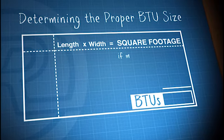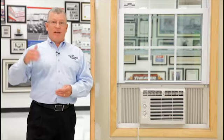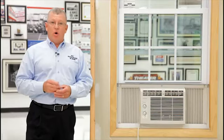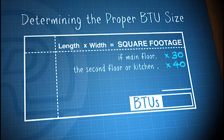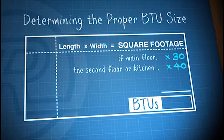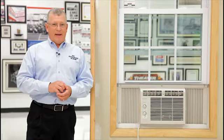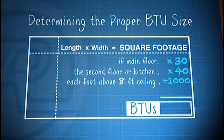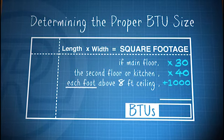If it's on the main floor, you'll multiply the square footage by 30. If it's a second floor or a kitchen area, multiply that square footage of the room by 40. If your ceiling height is over 8 feet, I always recommend adding 1,000 BTU for every foot over that 8-foot ceiling height.